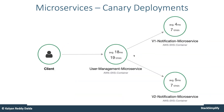For microservices, we also implement canary deployments. When calling the user management microservice, two versions of the notification service will be live, and traffic will be distributed based on configuration — 50/50 or 75/25. The traffic distribution to v1 and v2 notification microservices is implemented using Kubernetes out-of-the-box features by changing the pod count.